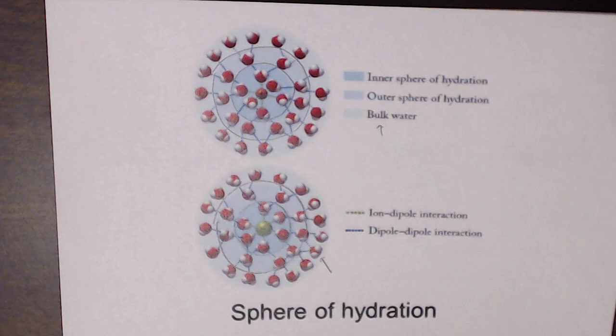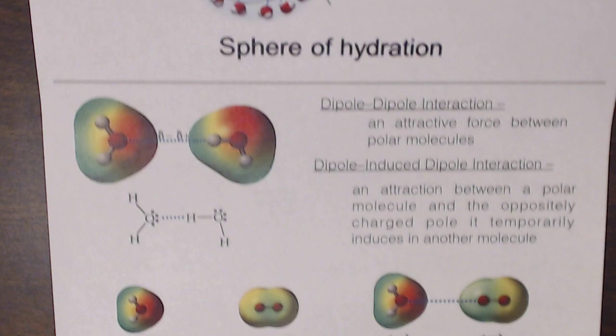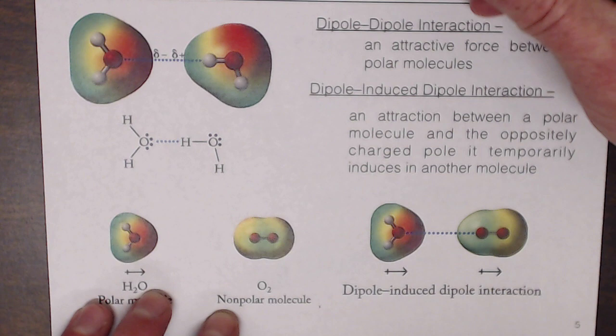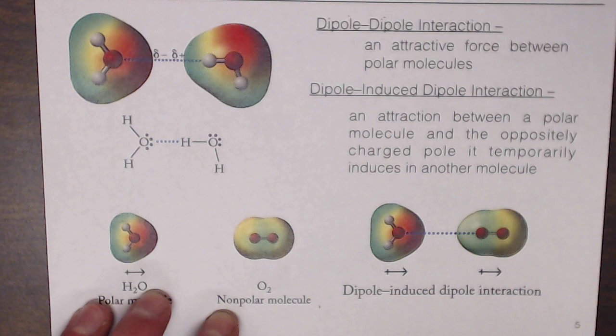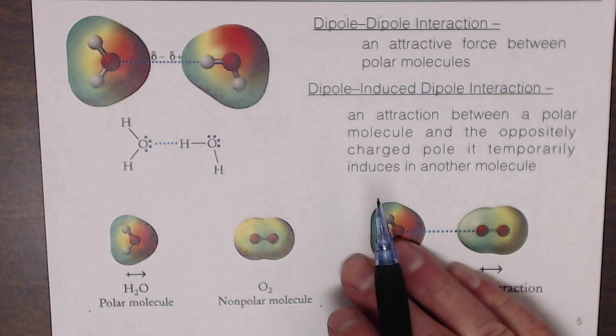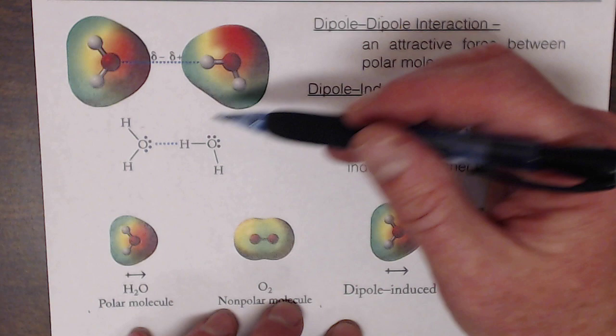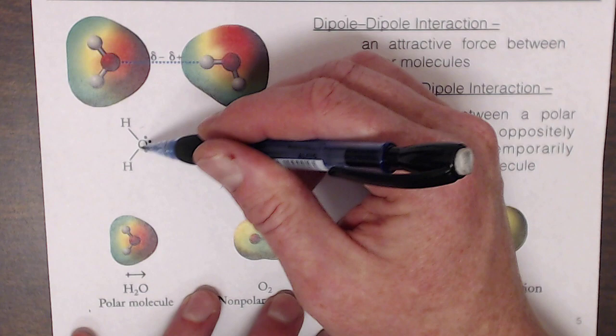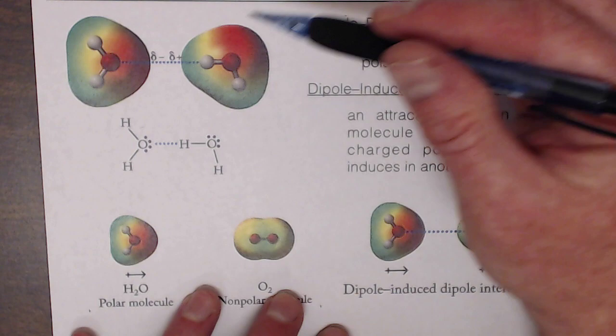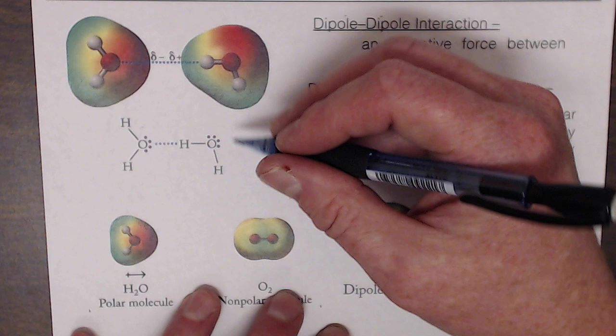Another type of interaction among polar molecules is the dipole-dipole interaction — the attractive force between polar molecules, which contain a permanent dipole moment. Looking at the interaction between two water molecules, their bent VSEPR geometry causes the negatives and positives to line up. This is a rather strong interaction — water boils at 100 degrees Celsius, which is a fairly large boiling point.